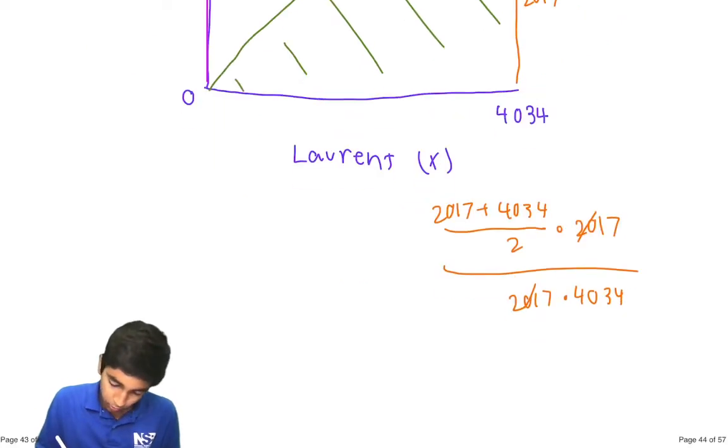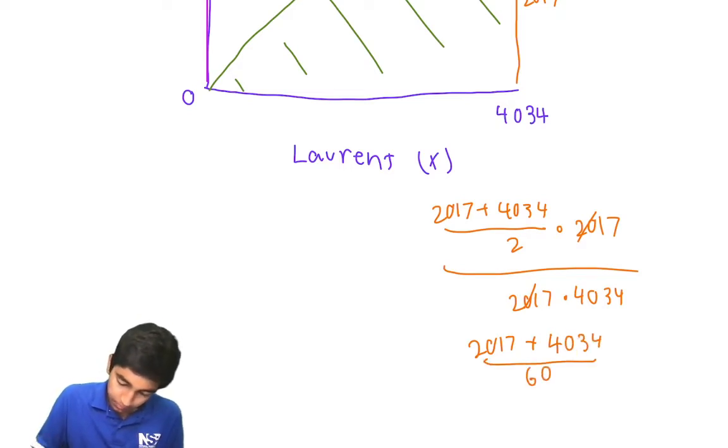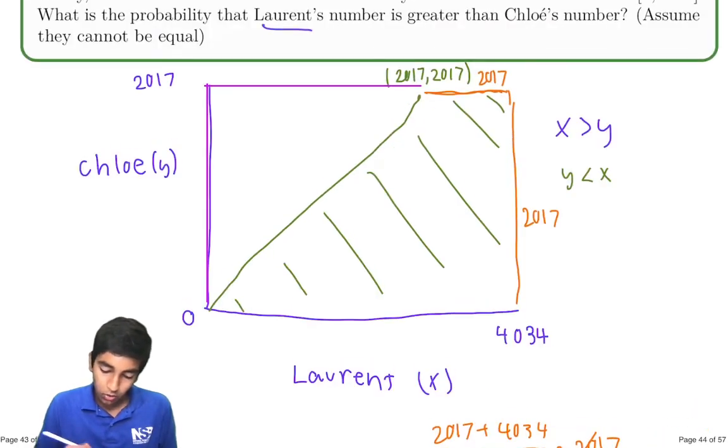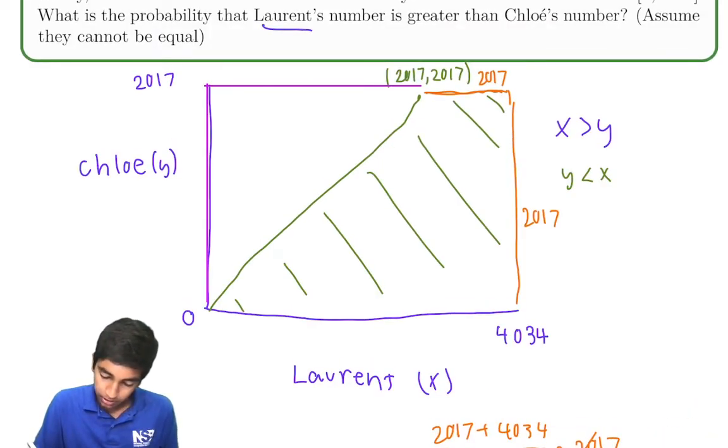And at this point, this is just 2017. Multiplying by 2 to the numerator and denominator. This is over 6. Or, let me just write it as 2 times 4034. And 4034 is 2 times 2017. This is 3 times 2017. Over. And that's going to be 4 times 2017. So, therefore, the answer is 3 over 4.